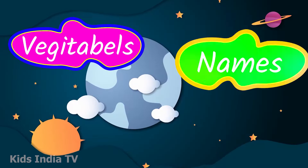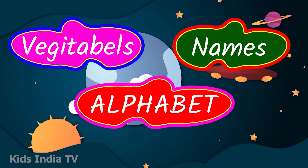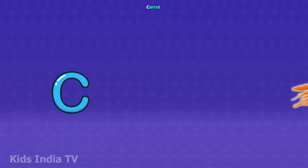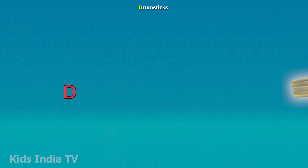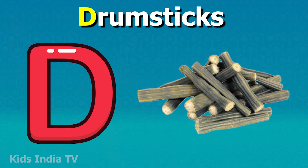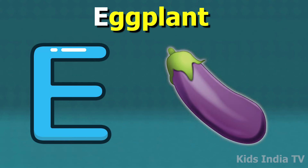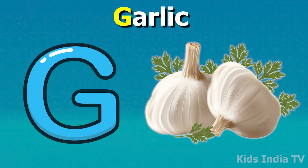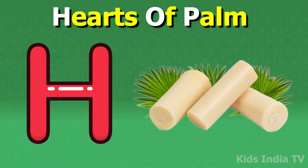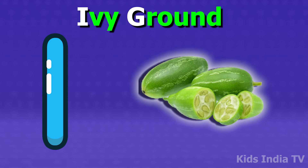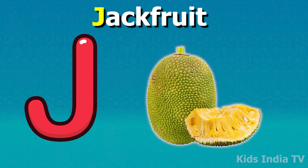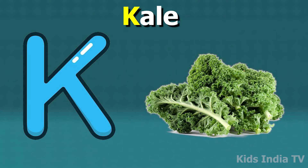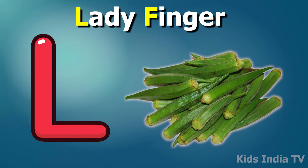Vegetable names according to alphabets: A for ash gourd, B for broccoli, C for carrot, D for drumstick, E for eggplant, F for fenugreek, G for garlic, H for heart of palm, I for ivy gourd, J for jackfruit, K for kale, L for ladyfinger.